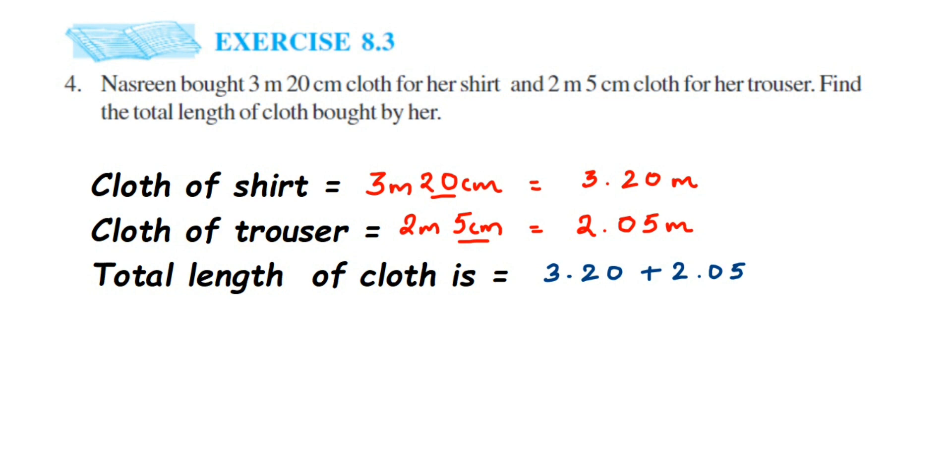So when you add it, we're going to use the lining up method, where we have to line up the decimal one below the other. It will be 3.20. The second number, I'm going to put decimal here. On the right side I have 0.05, on the left side I have 2.